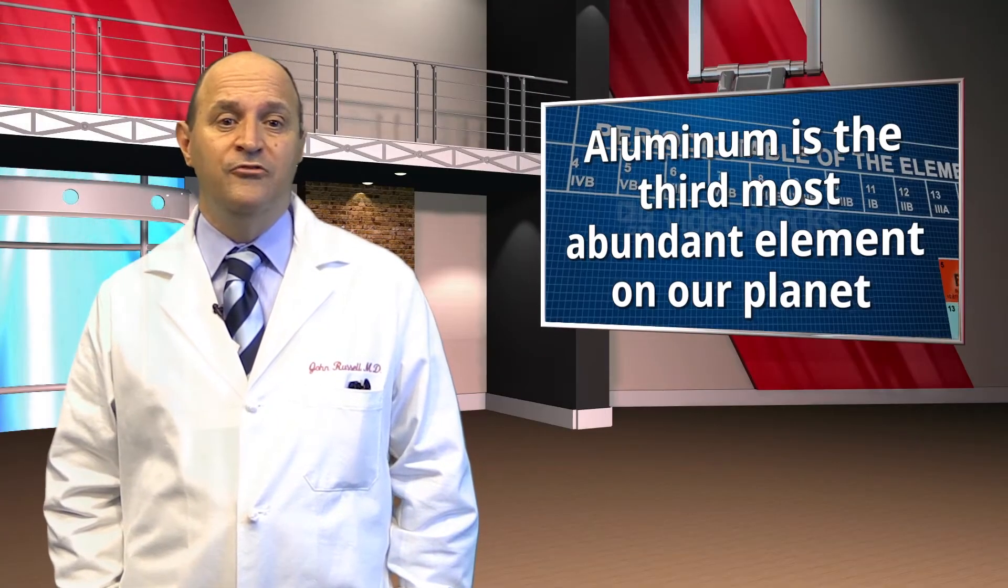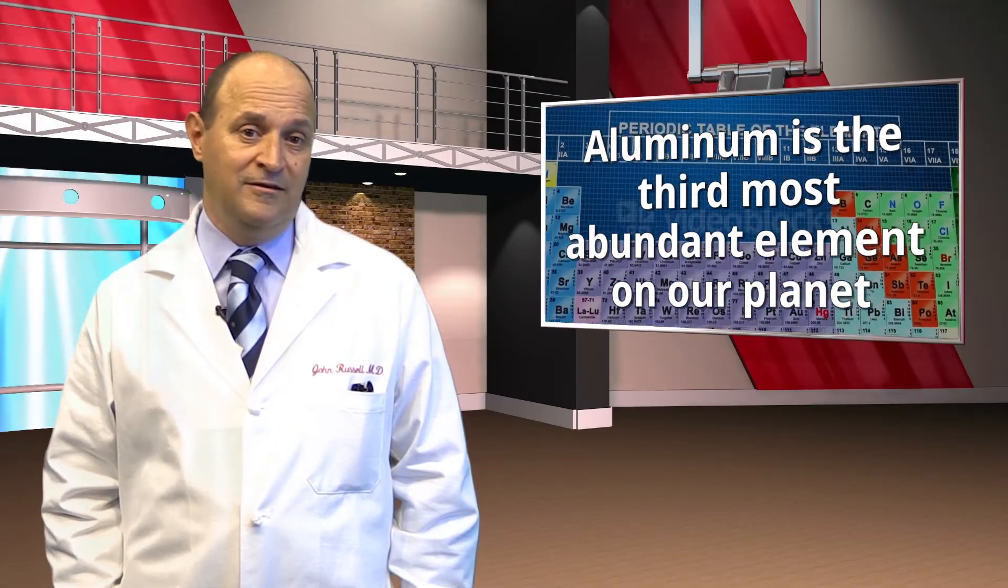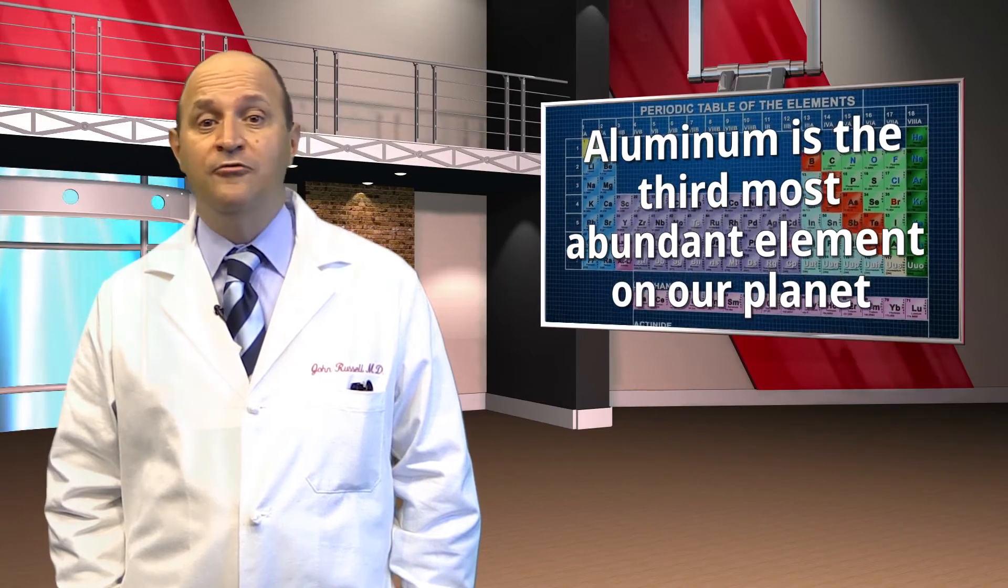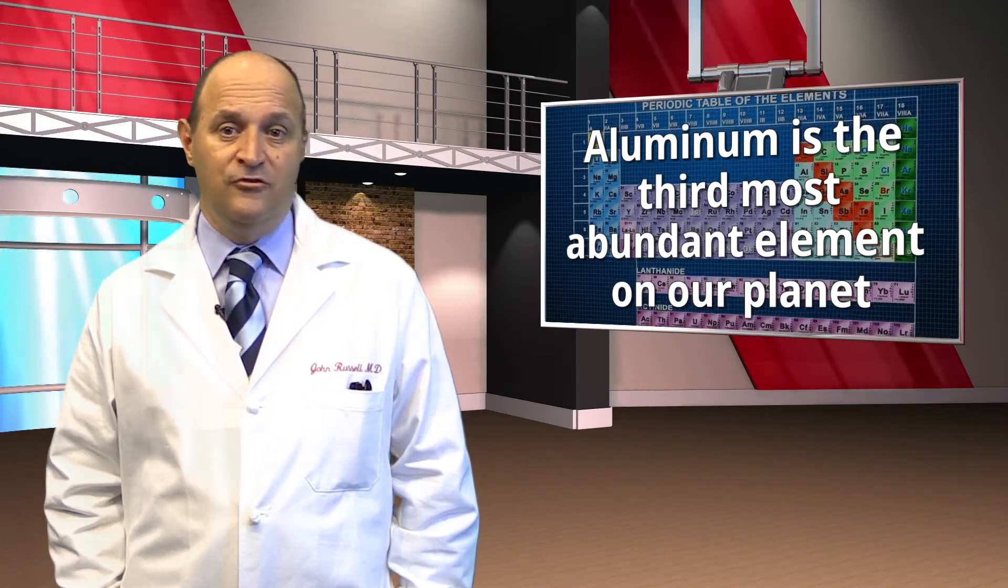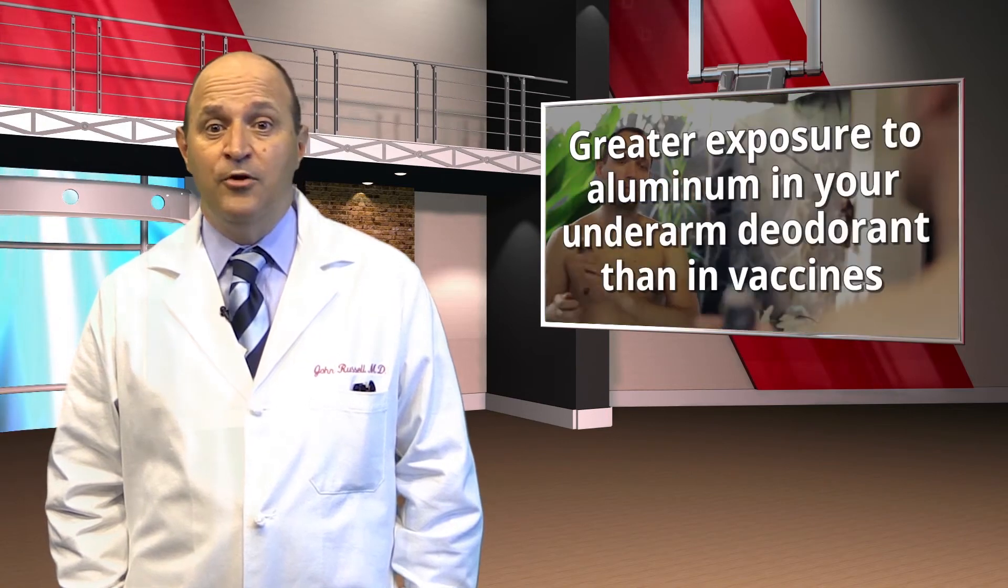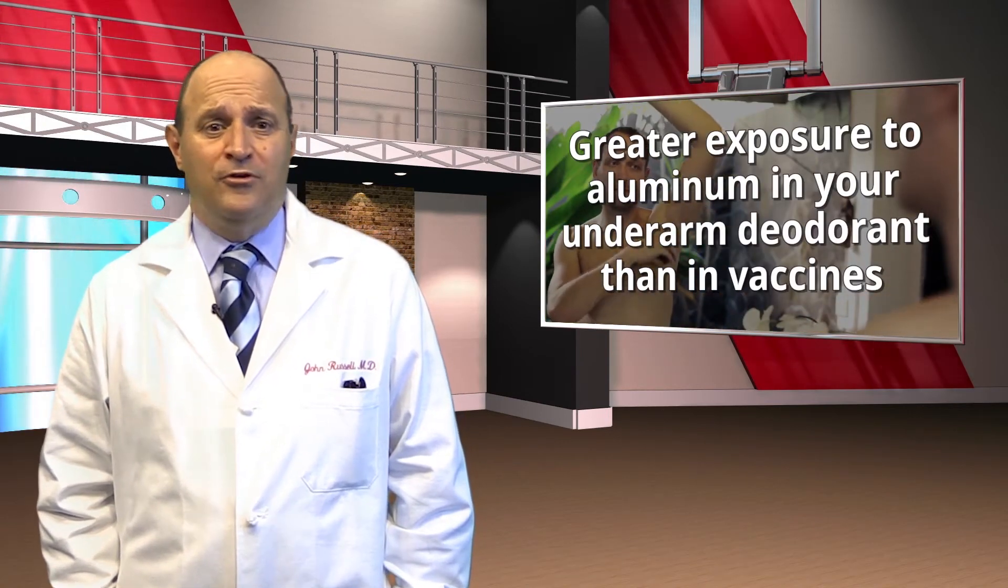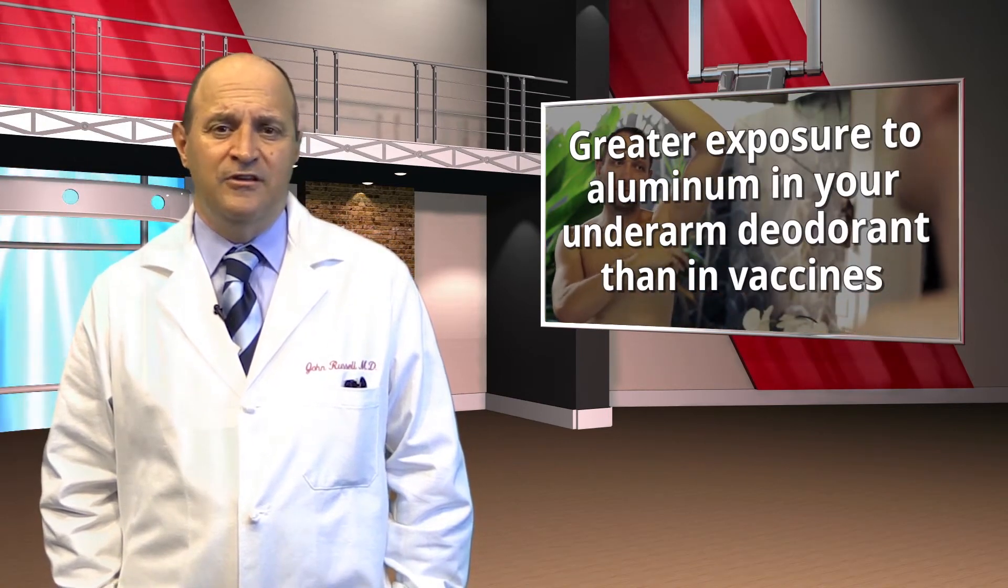Aluminum is the third most abundant element on our planet. It's found naturally in food, water, formula and breast milk. It is used in low levels in vaccines. Aluminum helps the body build stronger immunity against the germs in the vaccines. You have greater exposure to aluminum in your underarm deodorant than in the tiny doses in any vaccines.